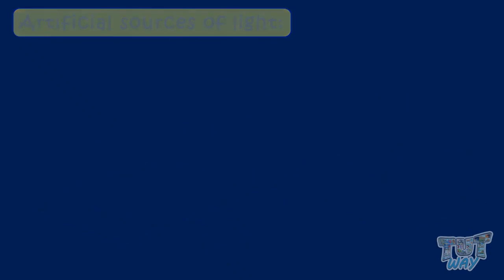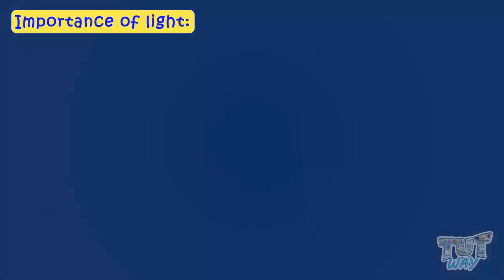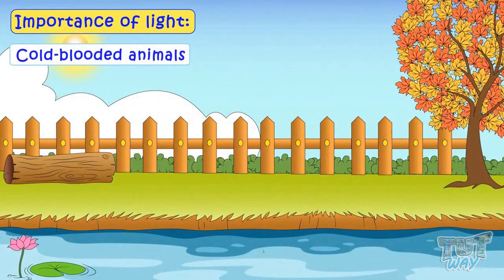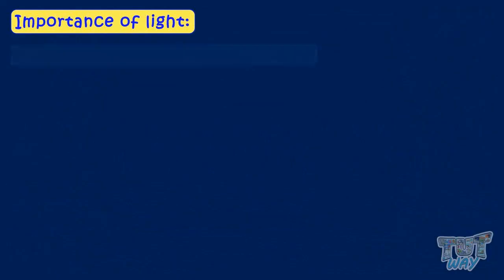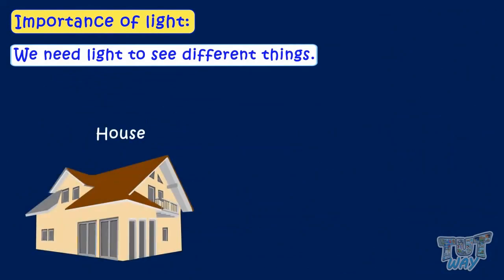Now let's learn about the uses of light or importance of light. All living things need light. Plants need light energy from the sun to grow and make their food using the process of photosynthesis. There are many cold-blooded animals, like reptiles, amphibians, and insects, that need light energy to keep their body warm. We need light to see different things and to light up our houses and workplaces.